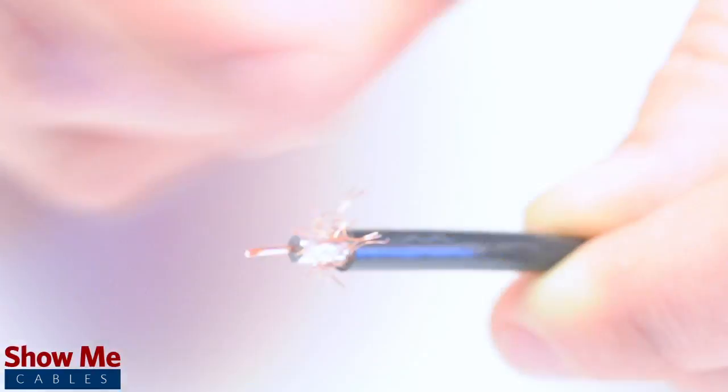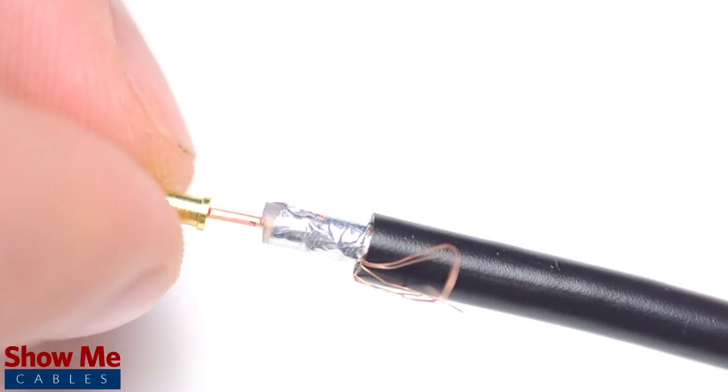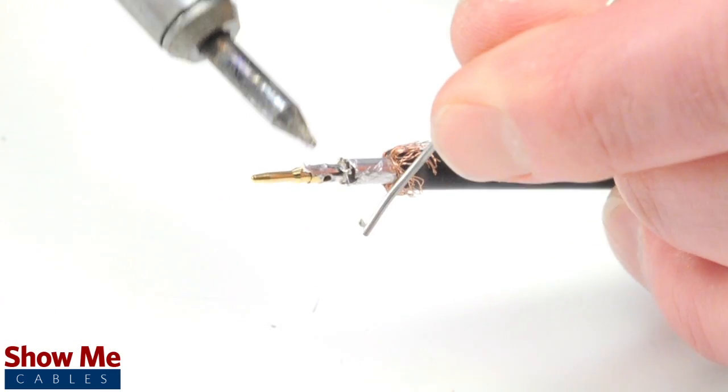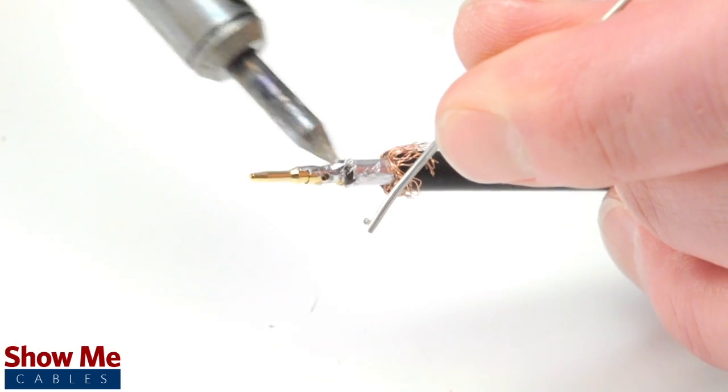Pull back the braided shield and insert the pin onto the center conductor. Solder the pin onto the center conductor and insert the connector housing over the cable.